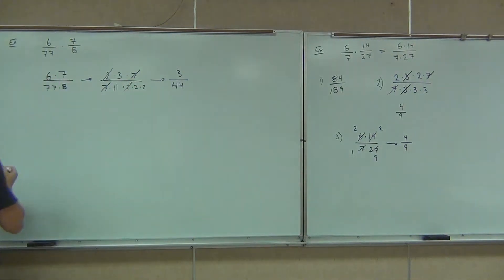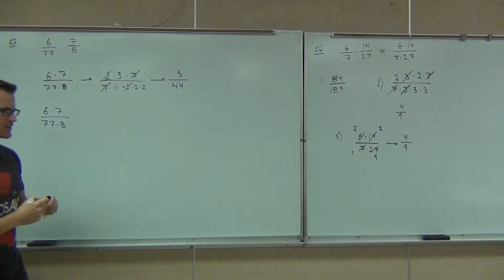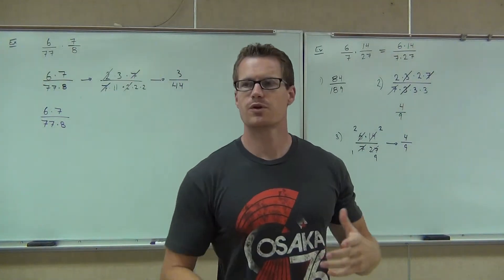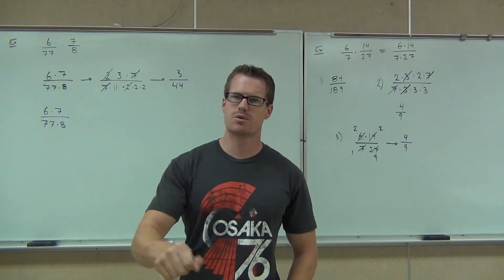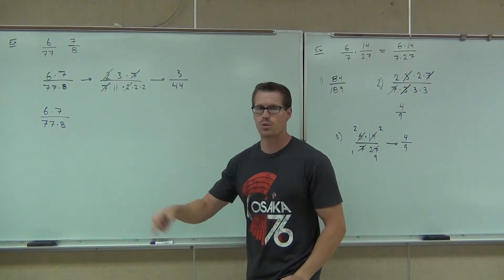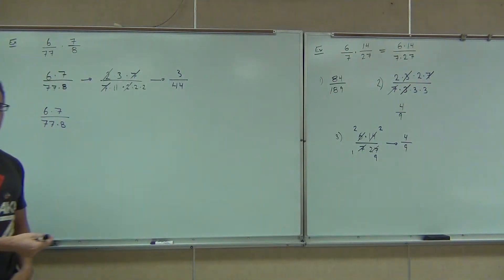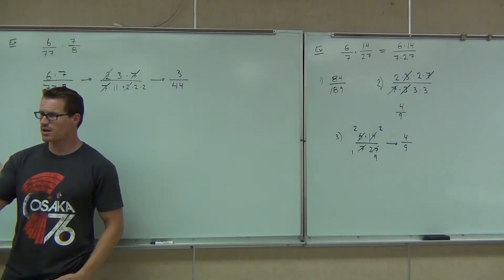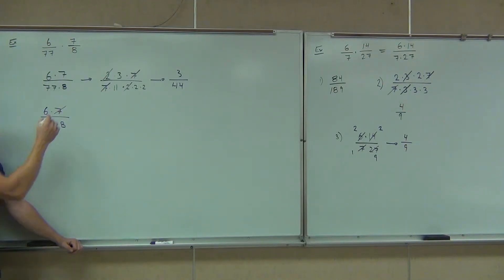Now let's try the other way. I'm going to spend a little more time on this method because this is the one you're ultimately going to end up using. What we're doing is looking for numbers that divide something on the top and something on the bottom. Can you think of two numbers that share a common factor? 7 and 77. 7 divides both those numbers. 7 divided by 7 is 1. 77 divided by 7 is 11.